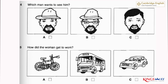Four. Which man wants to see him? Which man wants to see me? The one over there wearing a hat. The one with the glasses? No, not him. The other one. Now listen again. Which man wants to see me? The one over there wearing a hat. The one with the glasses? No, not him. The other one.